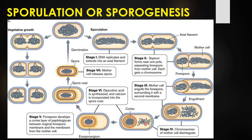In stage four, the chromosome of the mother cell starts to disintegrate. In stage five, the forespore develops the cortex layer of peptidoglycan between the original forespore membrane and the membrane of the mother cell. In stage six, dipicolinic acid begins to be synthesized and calcium is incorporated into the spore coat. The exosporium is also well developed in stage six.